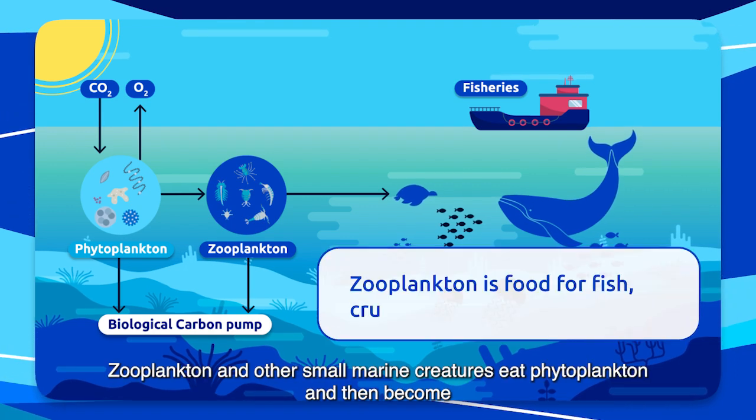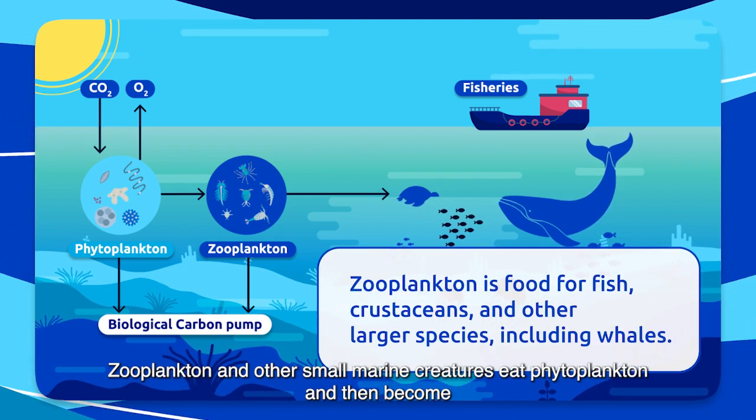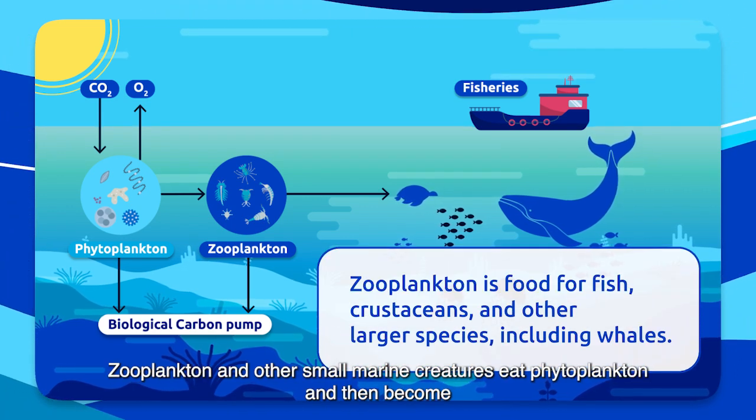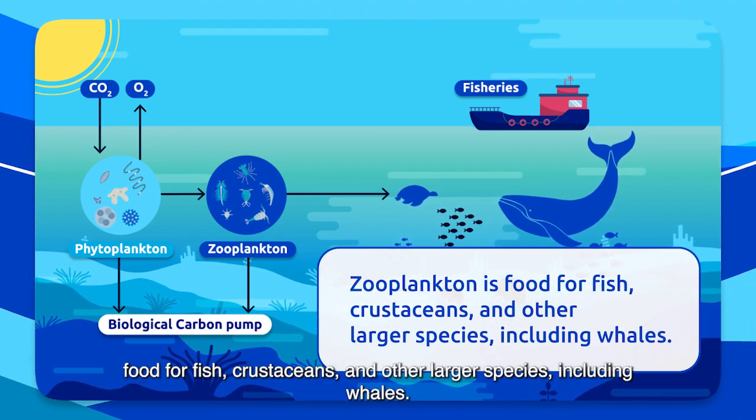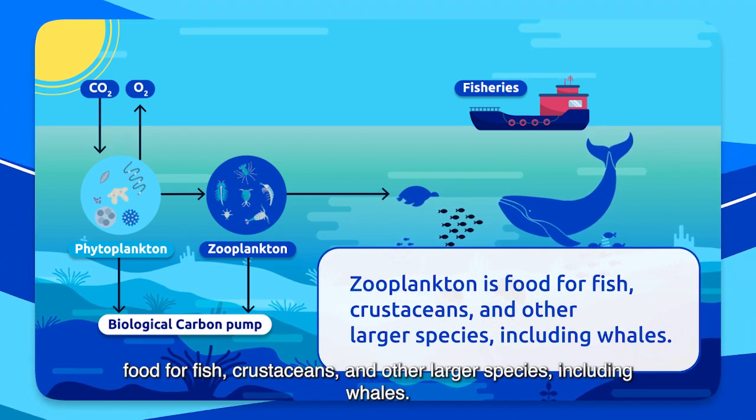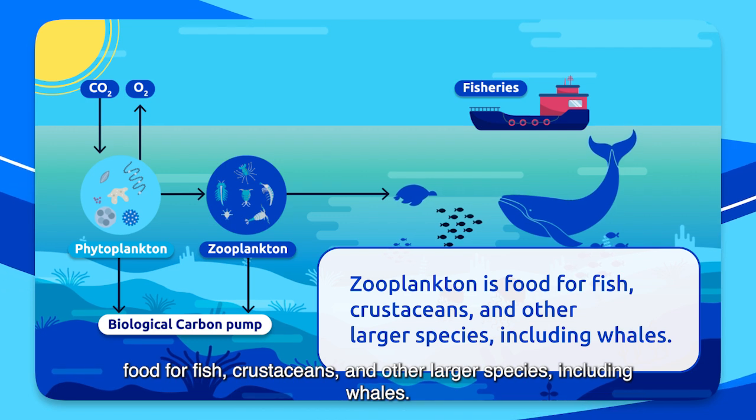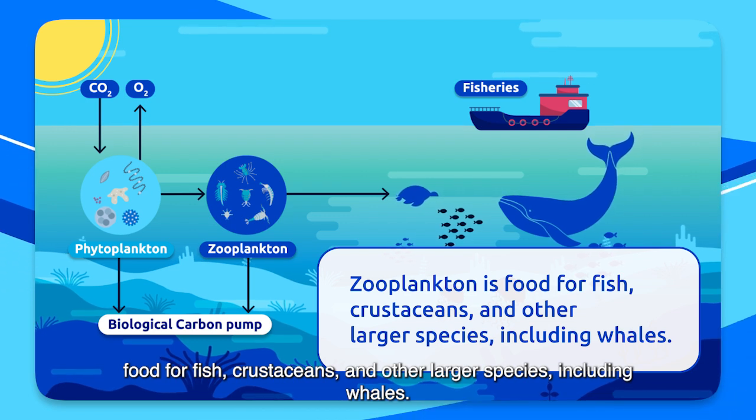Zooplankton and other small marine creatures eat phytoplankton and then become food for fish, crustaceans, and other larger species, including whales.